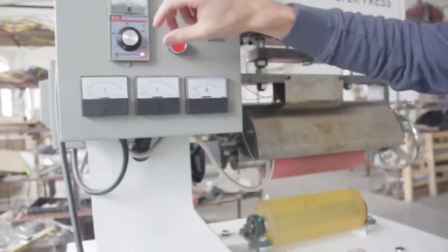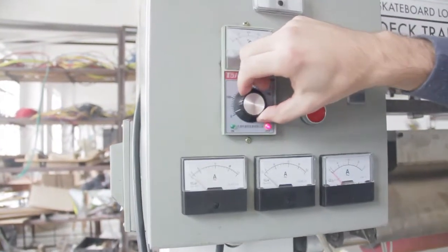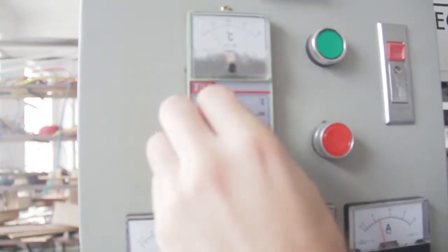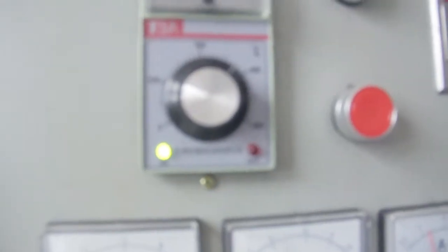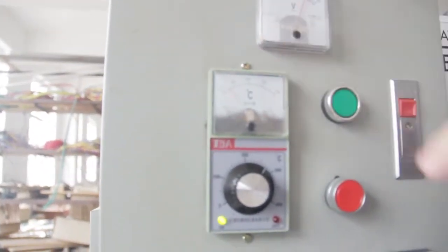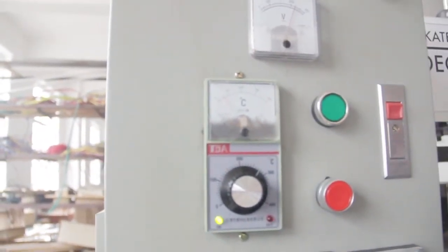The next step is turning on the heat. For a good print, with this machine you should work at around 280 degrees. And here you will see the heat going up. And when it's at 280 degrees, you can start working.